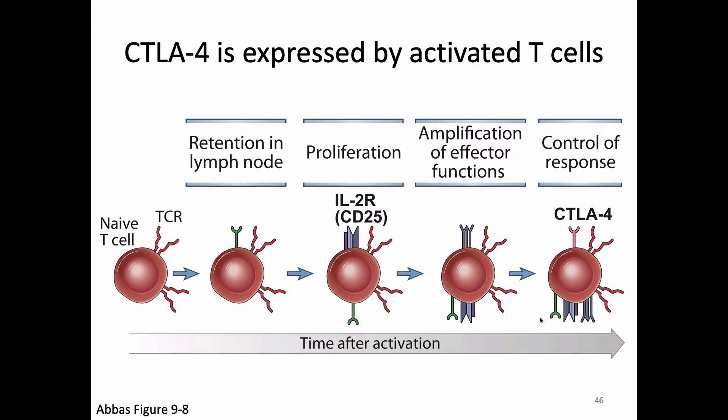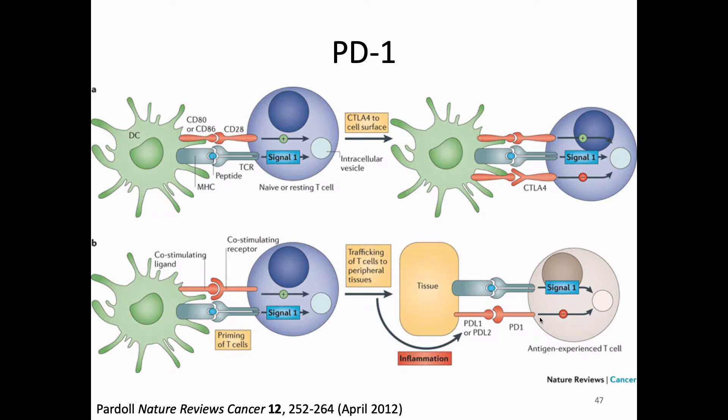Another co-stimulatory molecule is PD-1 — enough people have asked about it that I added it to the lecture. CTLA-4 leads to a negative signal on a T-cell that's pretty early in its life. However, if our T-cell is older — here called an antigen-experienced T-cell — that T-cell might instead get a signal from a negative co-stimulatory molecule called PD-1, which officially stands for Programmed Death-1. This is a way to turn off T-cells that have been activated previously.